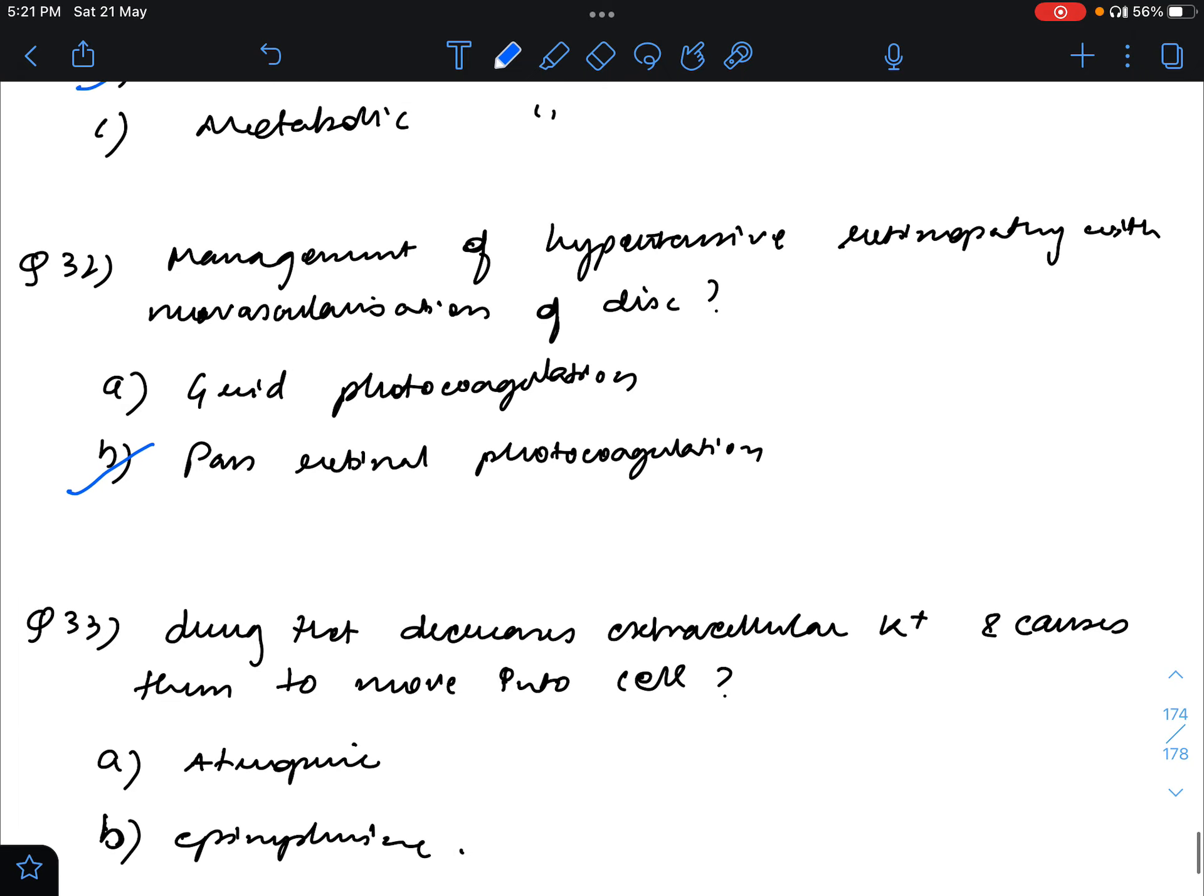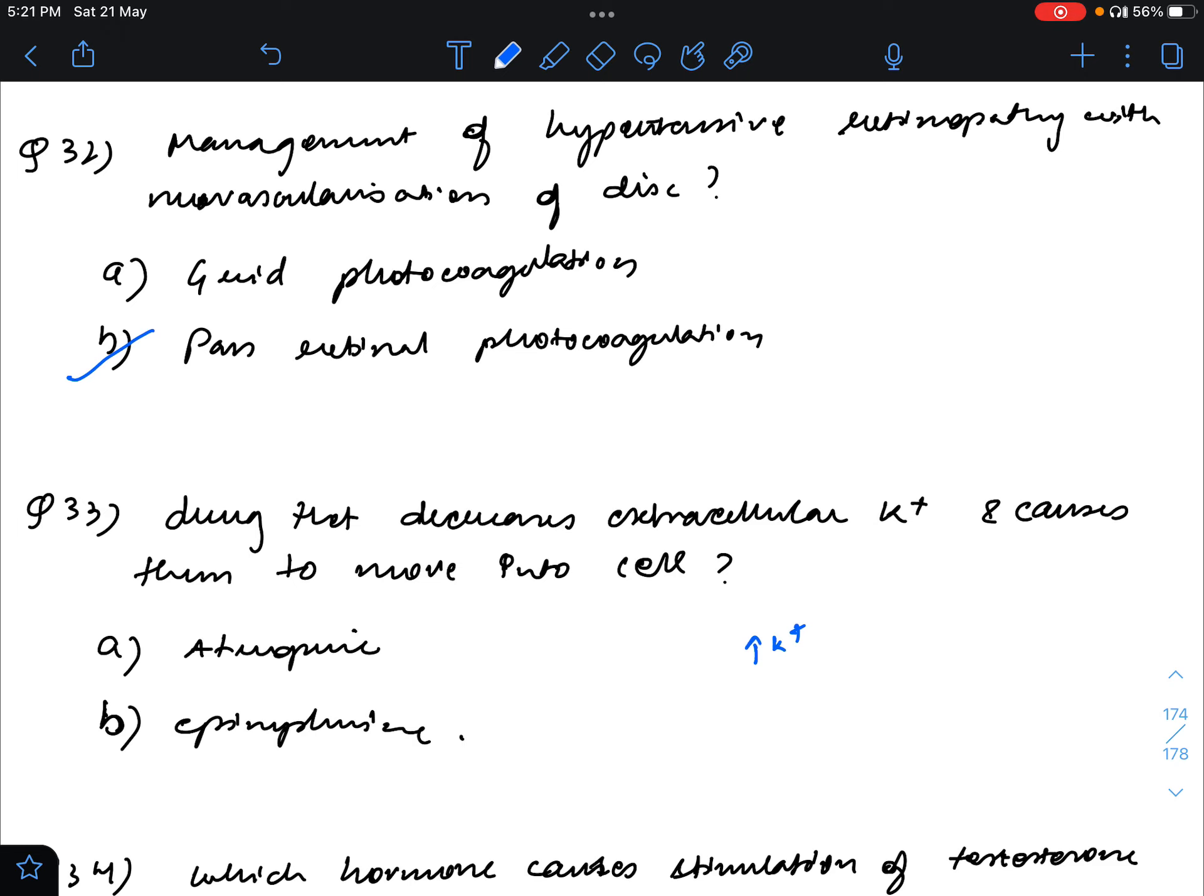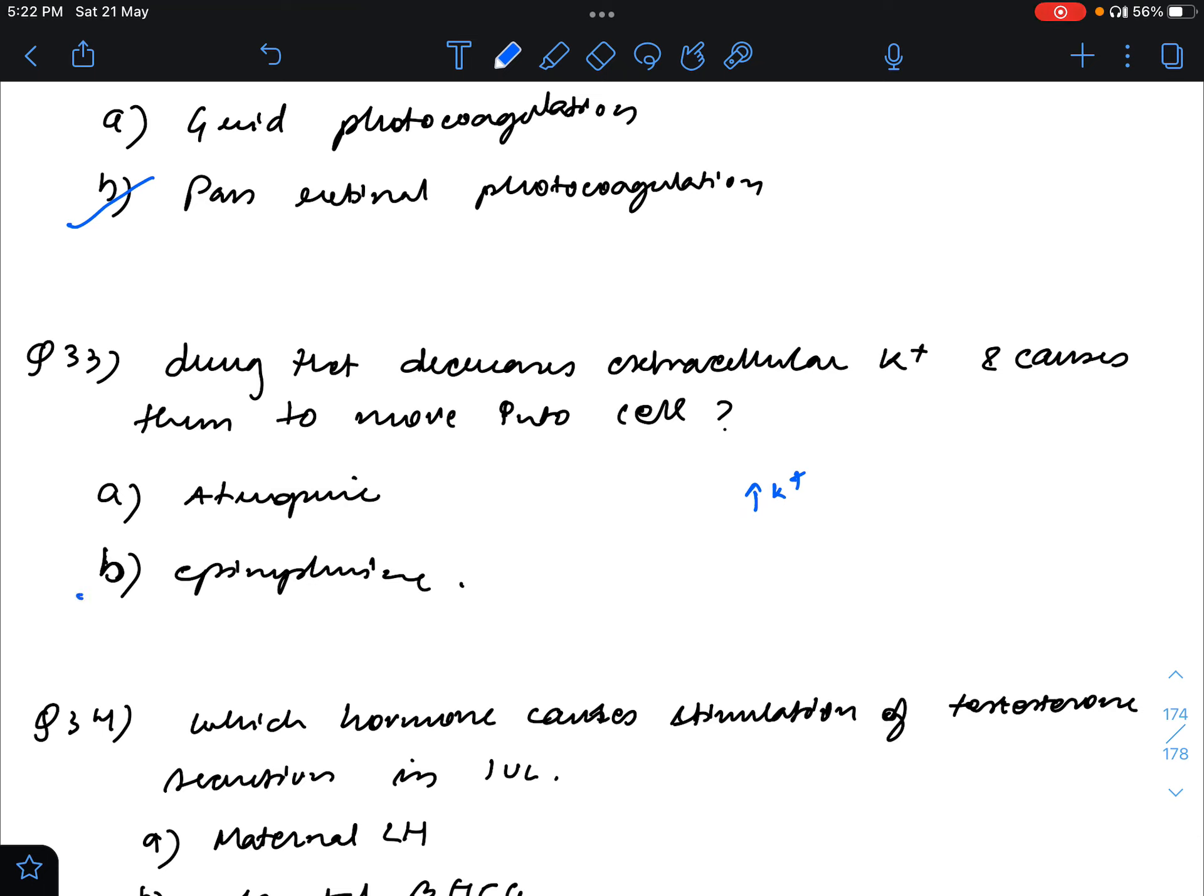Drug that decreases extracellular potassium and causes them to move into the cell. I didn't know the answer directly but I tried to think of it. In hyperkalemia we use insulin and we use salbutamol. Salbutamol works on the beta receptors, and among the options epinephrine is the one that works with the beta receptors, so I think epinephrine will be the answer. Atropine works on antimuscarinic receptors.